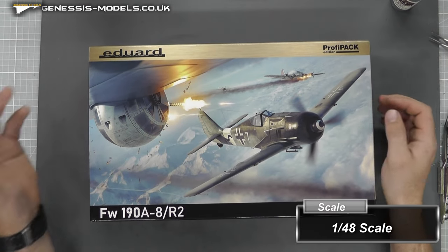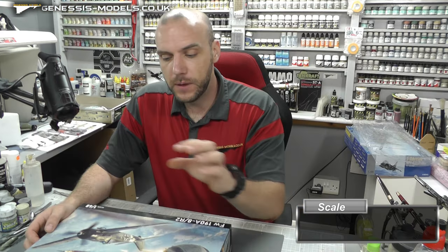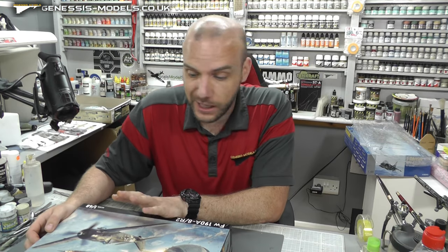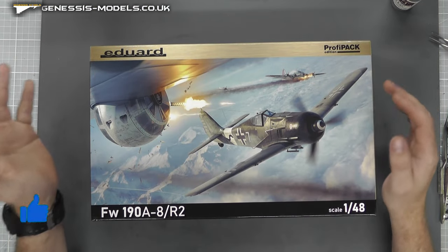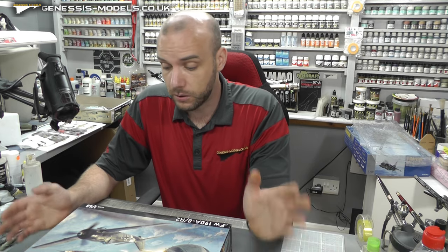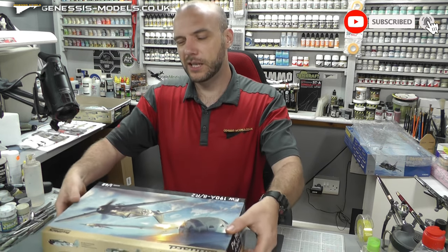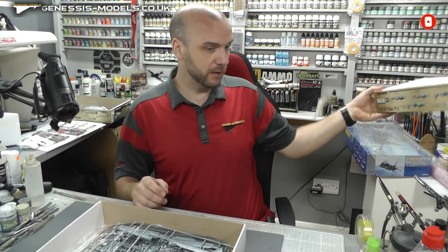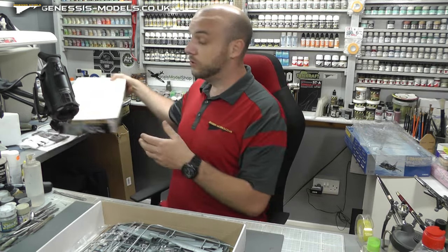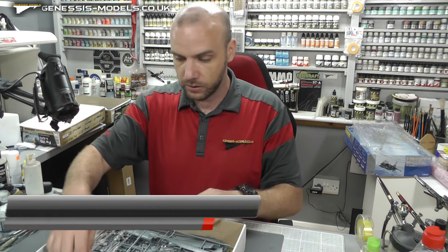This kit is new tooled in 2017, so not that old. This box was re-boxed in 2019 and retails around about the £29.40 mark, so not a bad price. Profi-Pack Edition means we get all that lovely photo etch and canopy masks, and we get lots of options in the form of lots of markings.